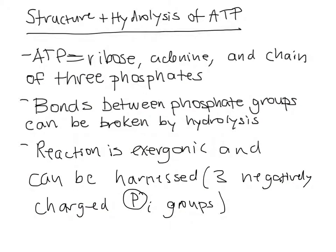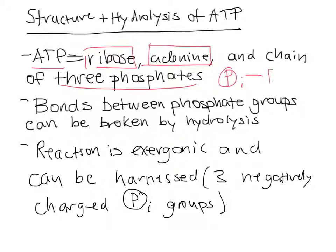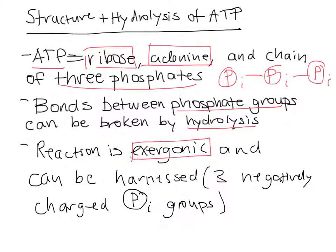On this slide, we'll talk about the structure of ATP and hydrolysis. ATP is made up of three main components: ribose, adenine, which is a nitrogenous base, and a chain of three phosphates. The bonds between the phosphate groups can be broken by hydrolysis, which you probably remember from a previous lecture. This reaction is exergonic, releasing energy.